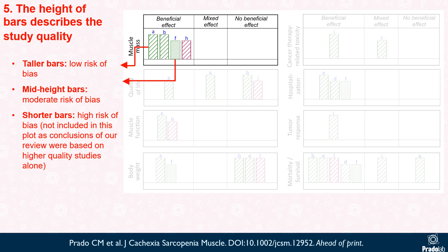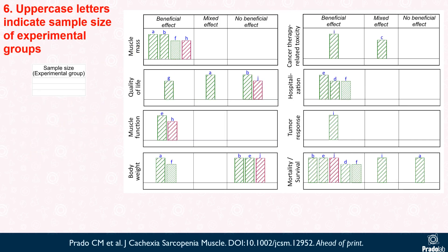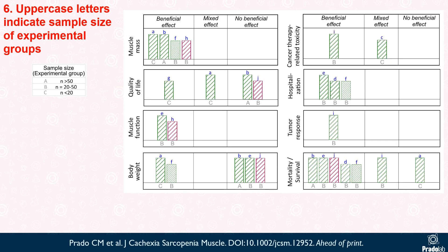Note that we only included studies with low and moderate risk of bias in this harvest plot, as we based our conclusions on higher quality studies alone for this systematic review. Uppercase letters indicate sample size of experimental groups. For example, study labelled as A had a sample size less than 20, study B had more than 50, and study F included between 20 to 50 patients in the experimental group.